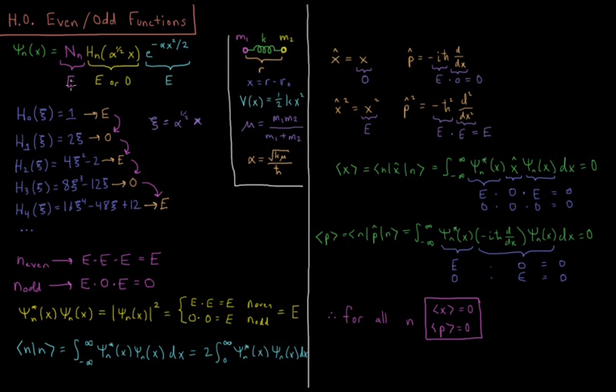So we have even times even or odd times even. So if we have an even value of our quantum number n, which starts at zero and goes up to infinity as an integer. If it's even, then we have even times even times even, which is an even function. If it's odd, then we have even times odd times even, and that gives us an odd function.